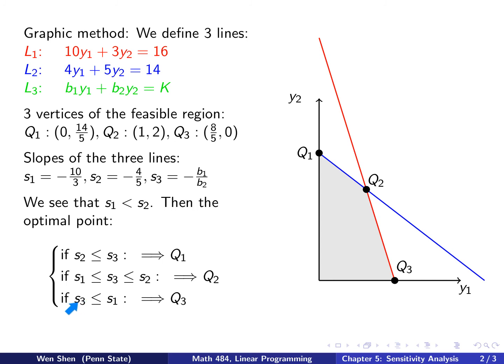And then the third one is S3 is even less than S1, so it's more steep than the red one. And then you move this, and then you will hit q3 as your optimal point. Okay? So it's very similar to the discussion we did for the first question once we converted into the dual problem.